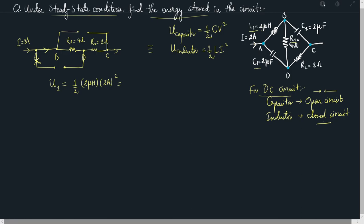Plugging in the values: U1 = half times 2 microhenry times (2 ampere) squared, which equals 4 microjoules.